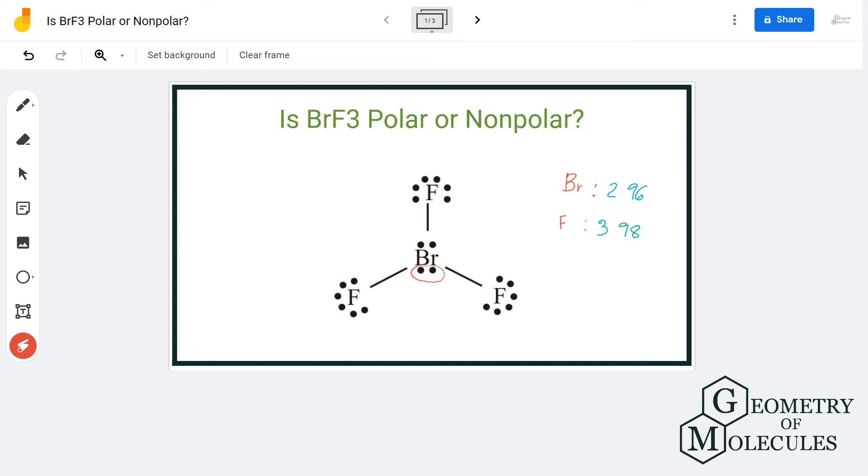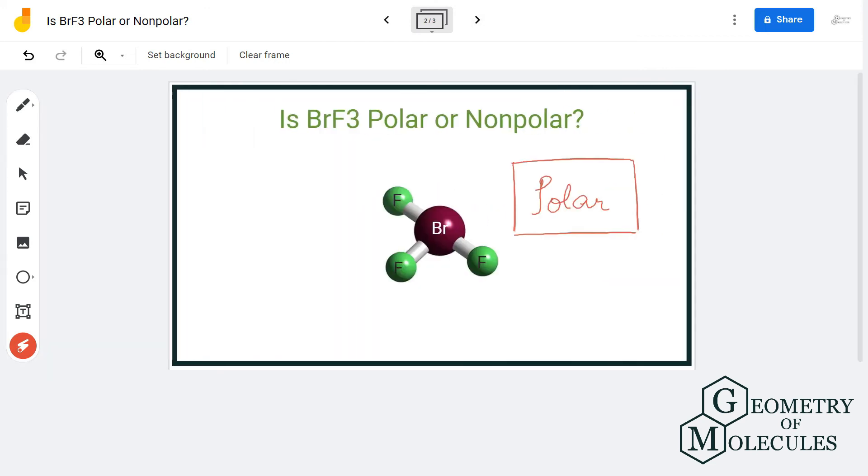On the bromine atom which creates or distorts the shape of the molecule and results in uneven distribution of charges, making this compound a negatively charged pole and making this molecule a polar molecule.